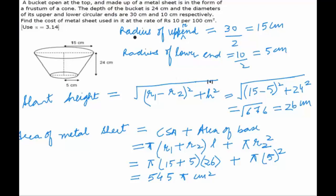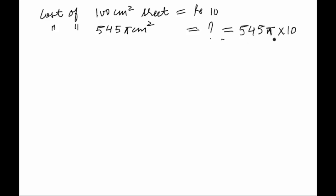Now we have to find out the cost at the rate of Rs. 10 per 100 cm square. That means cost for making 100 cm square metal sheet is equal to Rs. 10. So cost of making 545 pi cm square sheet, this we can easily calculate by 545 pi into 10 upon 100. This comes out to be equal to Rs. 171.1. This would be the cost of the metal sheet used to make this.